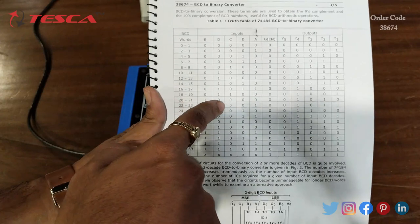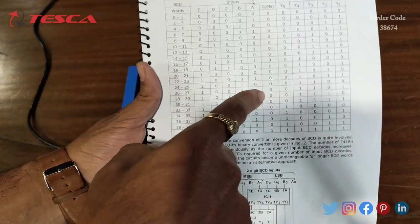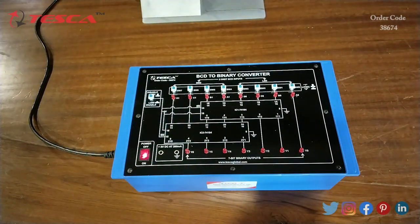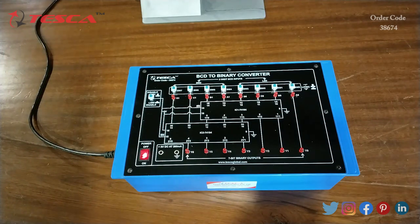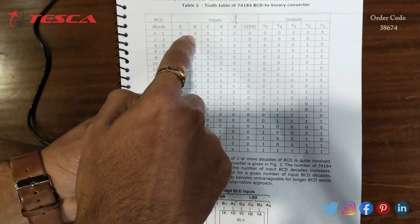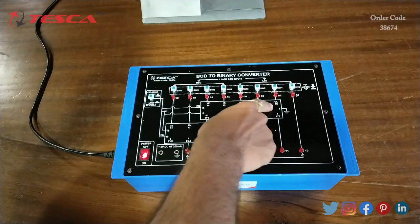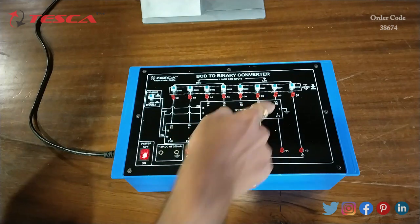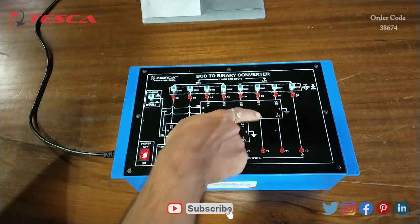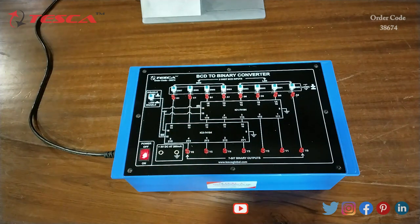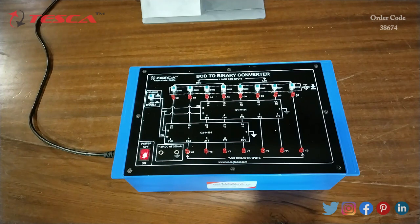This is the truth table mentioned in the manual. We will compare this truth table with this kit and give input and output according to that. As mentioned in the manual, we have inputs A B C D and E. Here we have these inputs as A B C D and E of IC1, and outputs as Y1 Y2 Y3 Y4 and Y5. Now we will give the inputs and see the output.